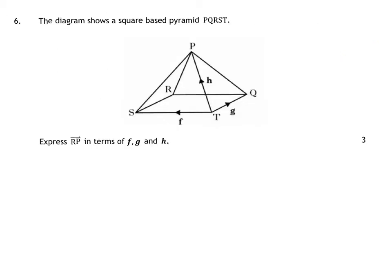Question 6 is your vector journey. So we have to get from R to P using only the vectors F, G, and H. My route from R to P goes that way, that way, that way. The first part of my journey from R to S is the same as G but going the opposite direction, so the first part is negative G. The next part of my journey is going the opposite direction to F again, so negative F. And then I'm following H, so it's plus H.